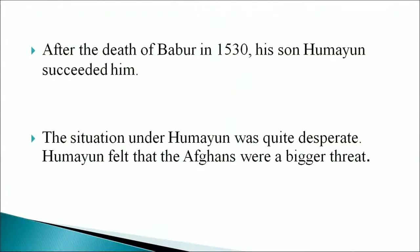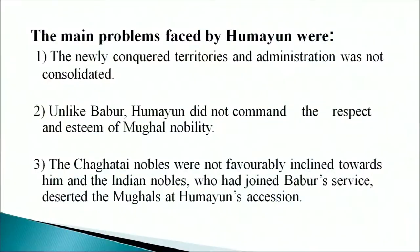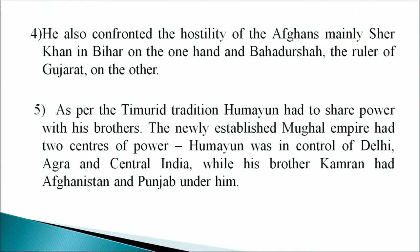Let us look at Humayun's retreat and Afghan revival from 1530 to 1540. After the death of Babar in 1530, his son Humayun succeeded him. The situation under Humayun was quite desperate. The main problems faced by Humayun were: the newly conquered territories and administration were not consolidated; unlike Babar, Humayun did not command the respect and esteem of Mughal nobility; the Chagatai nobles were not favorably inclined towards him; and Indian nobles who had joined Babar's service deserted the Mughals at Humayun's accession. He also confronted the hostility of the Afghans, mainly Sher Khan in Bihar on one hand, and Bahadur Shah, the ruler of Gujarat, on the other.